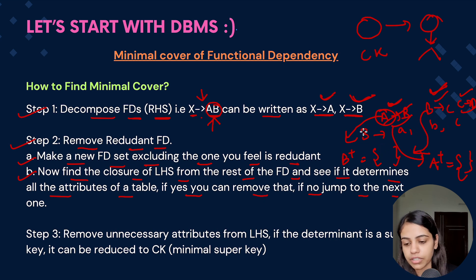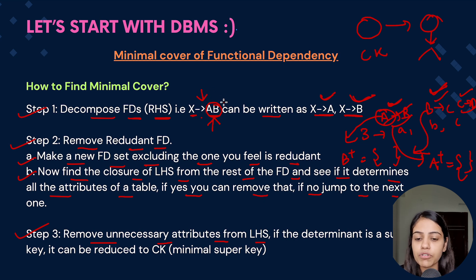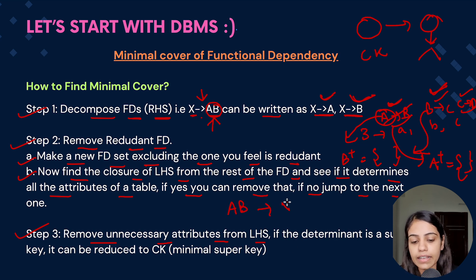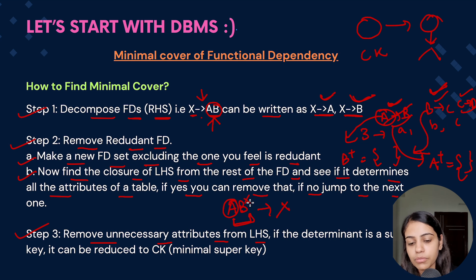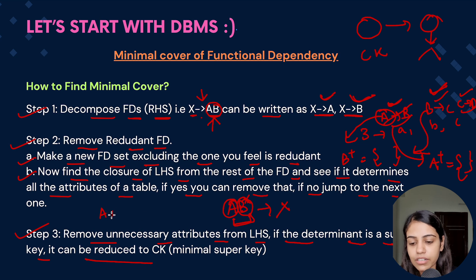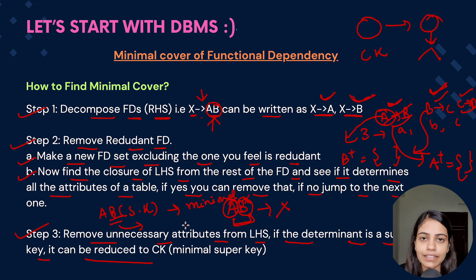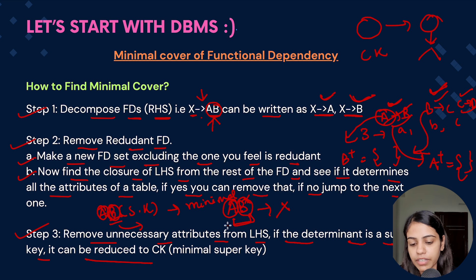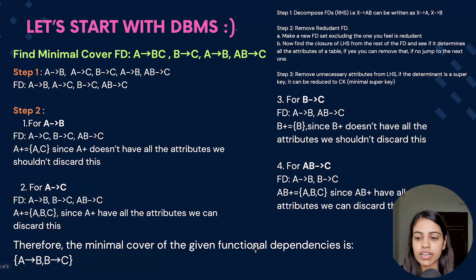Step three: we have to remove the unnecessary attributes from the LHS. Earlier we decomposed the RHS attributes; now we also remove unnecessary attributes from the LHS. Consider if AB determines X — we check if A alone or B alone can determine all the attributes in the functional dependency set. The determinant may be a super key that can be reduced to a candidate key, which is a minimal super key.